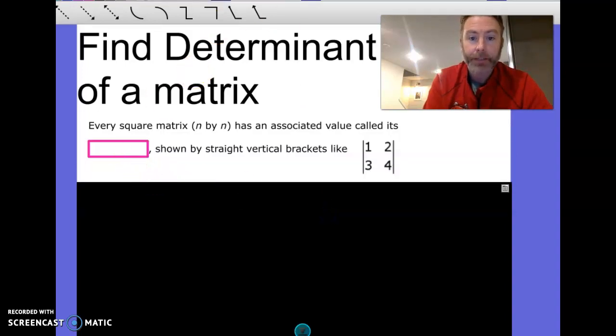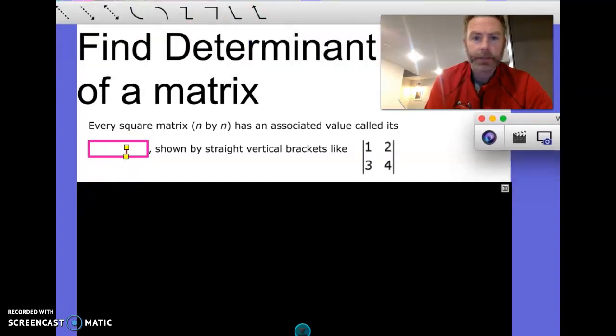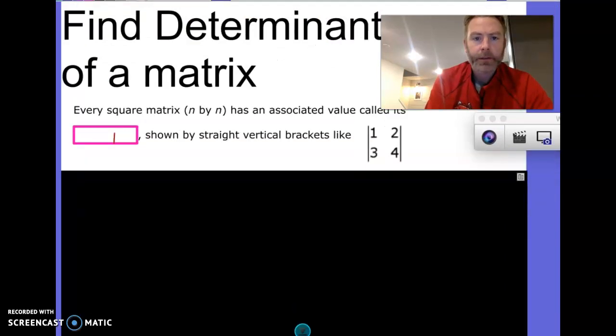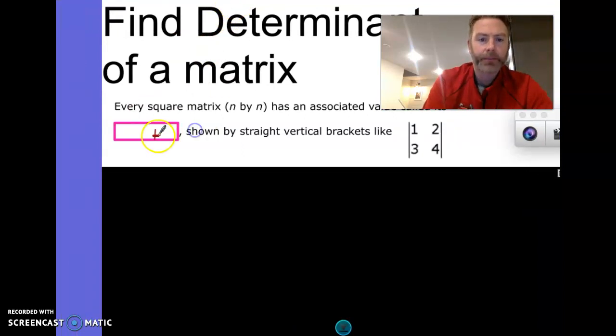So first of all, just some terminology here. So every square matrix has an order n by n, an associated value, it's called... give me a second here, getting crazy. It is called... alright, here we go.